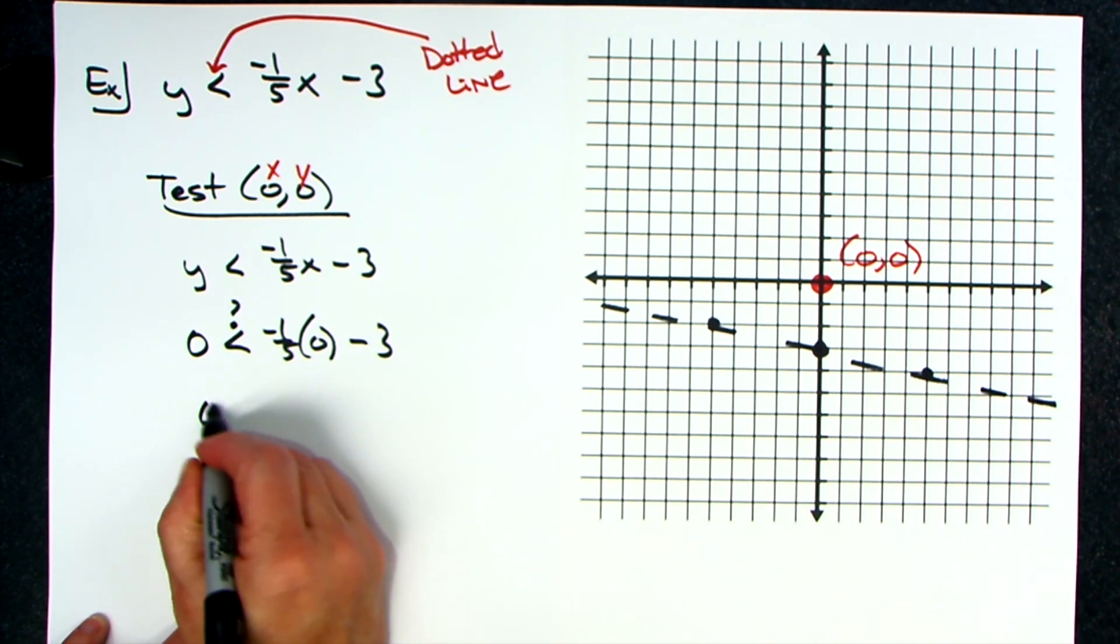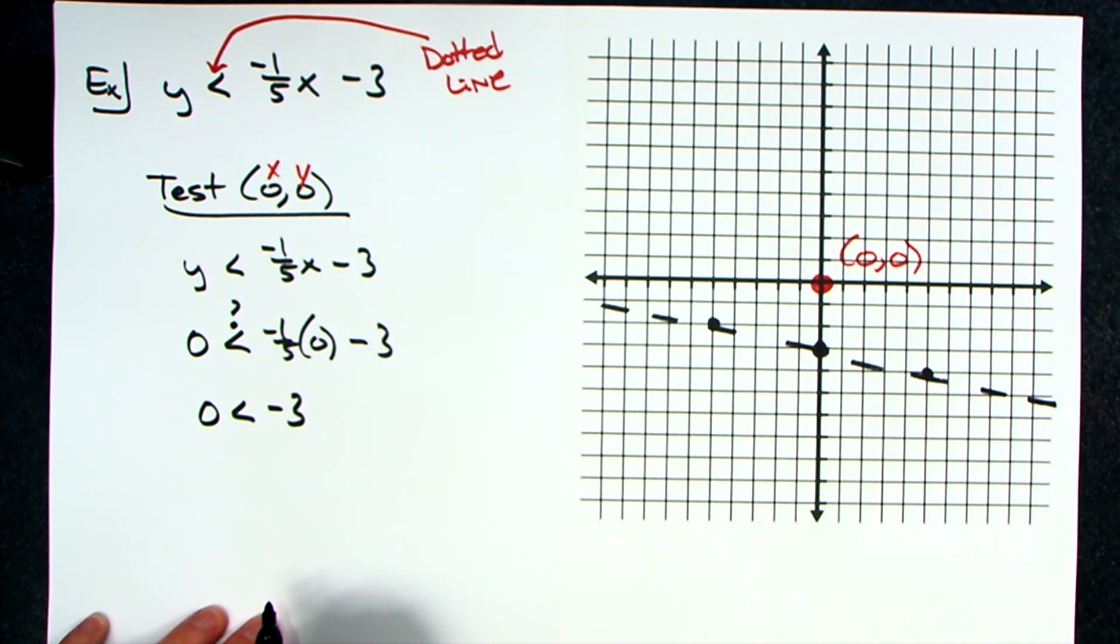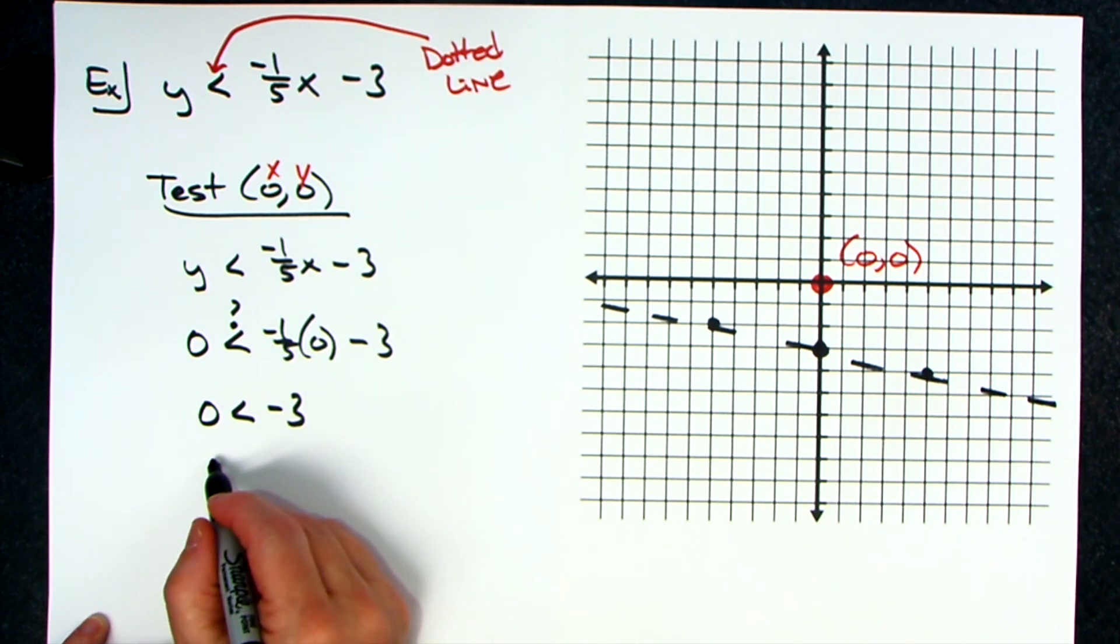Zero is less than negative three. This one turns out to be a false statement.